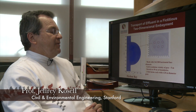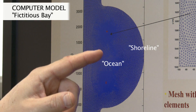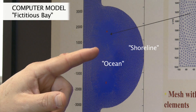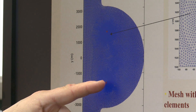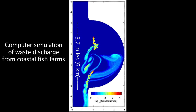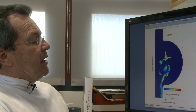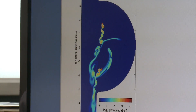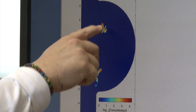We set up a grid in a fictitious bay, and we put two sets of fish pens in this coastal embayment. The first set of six pens is right there, where you can see that sort of red dot, and the second set is right there. We're injecting a numerical dye — what we're looking at is a time-dependent computation of the dye concentration coming out of our two fish farms, looping through over six tidal cycles.